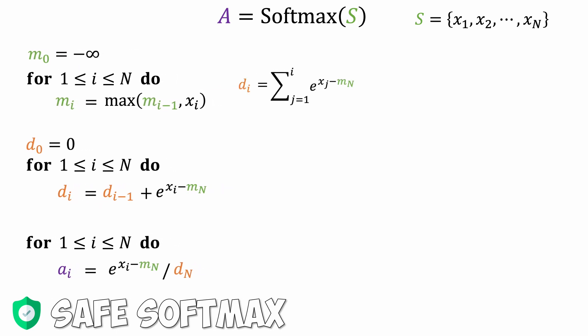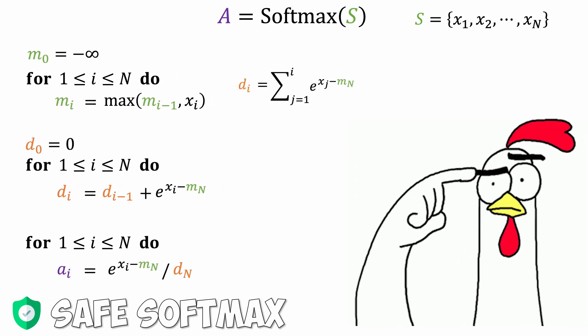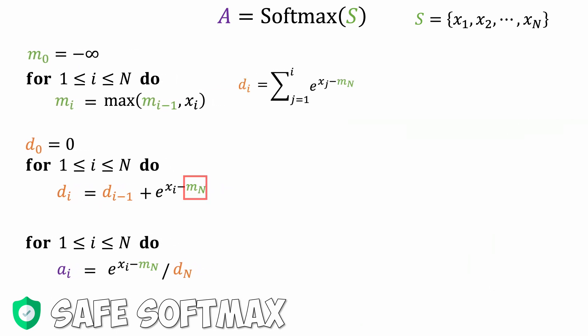Let's explore how to reduce global memory access by fusing computations. We cannot fuse the second pass with the first one due to the dependency of mN, which is the maximum value of the sequence found in the first pass. We can remove this dependency by replacing the value mN with mi, where mi is the maximum value of the partial sequence from x1 to xi. At the end, note that dN will equal dN'.